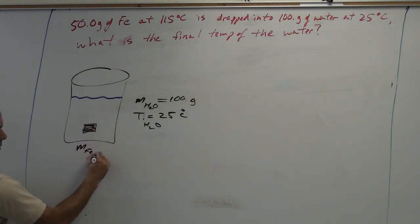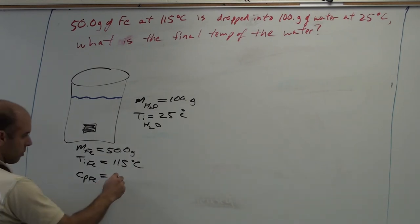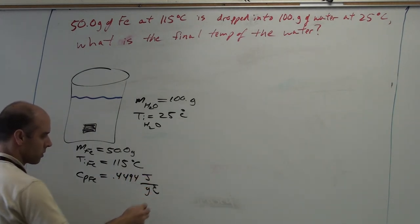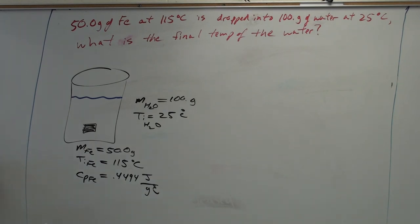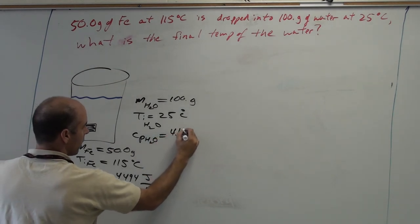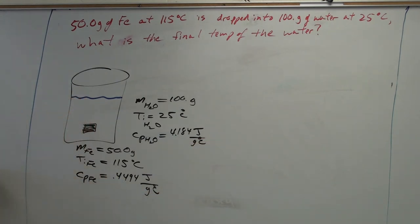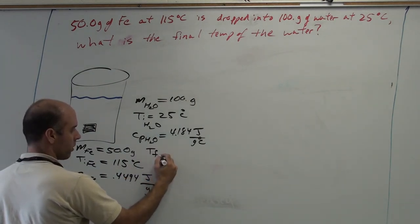We're going to drop a piece of iron in here. How much iron? 50 grams. What's the initial temperature of the iron? 115 degrees Celsius. Do we know the specific heat of iron? Yes, we do. 0.4494 joules per gram degree Celsius. Do we know the specific heat of water? Yes, we do. 4.184 joules per gram degree Celsius. The one thing we don't know is what is the final temperature of the water.